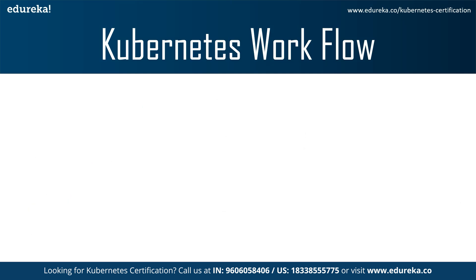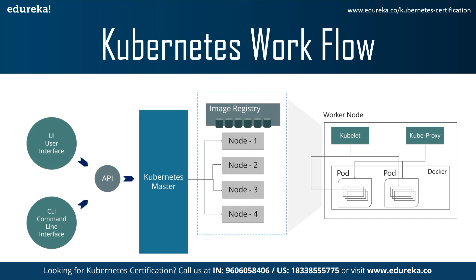Next are the worker or slave nodes. The worker nodes contain all the necessary services to manage the networking between containers, communicate with the master node, and assign resources to the scheduled containers. The worker node has various components like Docker container, kubelet, kube-proxy and pods. Docker runs on each of the worker nodes and runs the configured pods. Kubelet gets the configuration of a pod from the API server and ensures that the described containers are up and running. Kube-proxy acts as a network proxy and a load balancer for a service on a single worker node. A pod is one or more containers that logically run together on nodes.